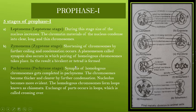The third stage is the Pachytene stage. Synapsis, which began in the Zygotene stage, is completed in the Pachytene stage. The thickening and condensation of chromosomes also continues. The nucleolus becomes more evident and obvious. With the homologous chromosomes paired, loop formations called chiasmata appear. This is a very important phenomenon — there will be an exchange of parts between these loops, which we call crossing over. Crossing over leads to diversity in the next generation.